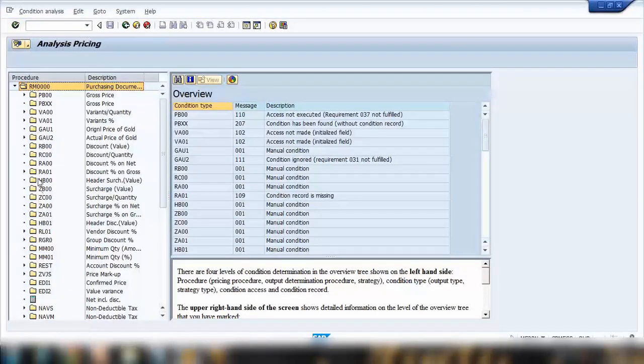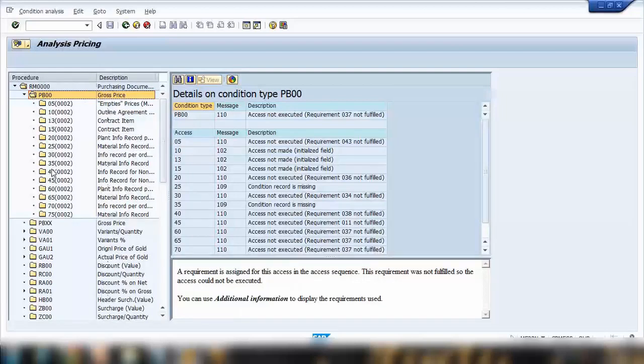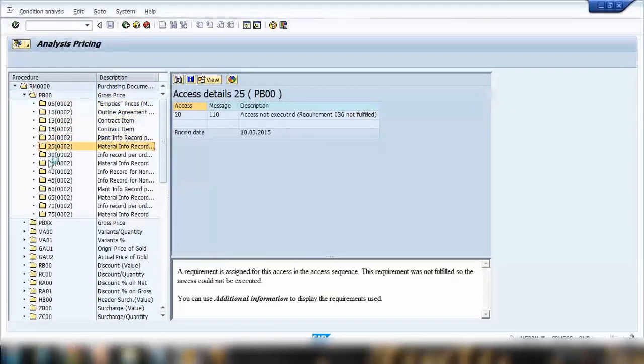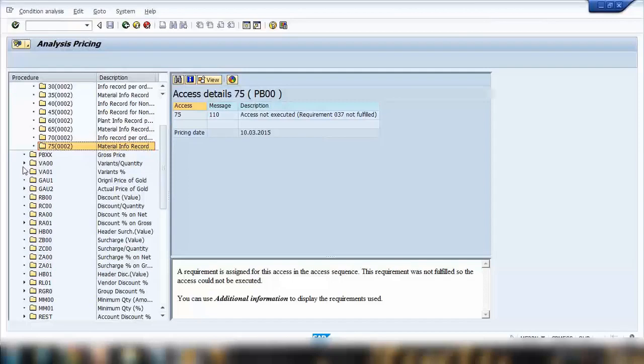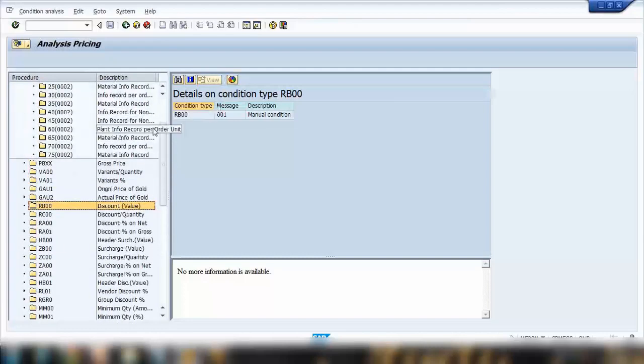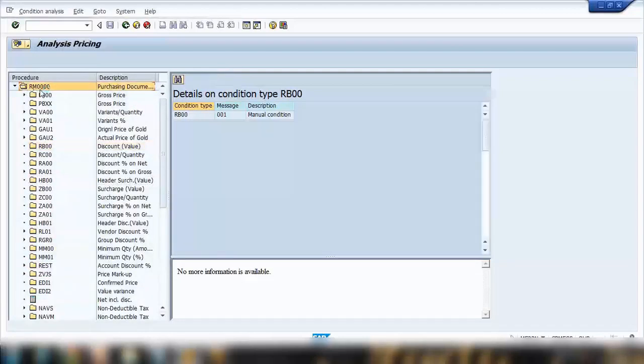So you can see here the pricing procedure uses this one RM0000. And it has further condition types that is being used. So for example, here you can see that first condition type is PB00, which is gross price. If you open that PB00, here it will show you that where it will find the price. Similarly, if you double click on each one, and wherever it found the price, it will show you the green light there. The price can be manual as well. And same way, you can see some gross price. If you double click on gross price, you can see discount. If there was any discount, you can double click on that, you will see a green light here. So I will come back to this one later on again, once I will customize my own pricing procedure, and I will show you all the green lights and the warning messages.